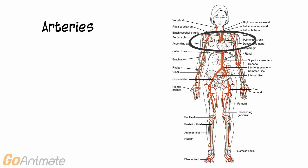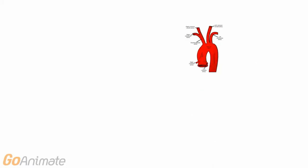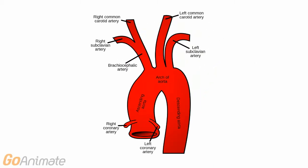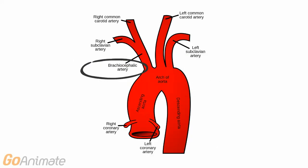Let's begin with the arteries. We will examine the largest artery, the aorta, first. The parts of the aorta include the ascending, arch, and descending aorta.